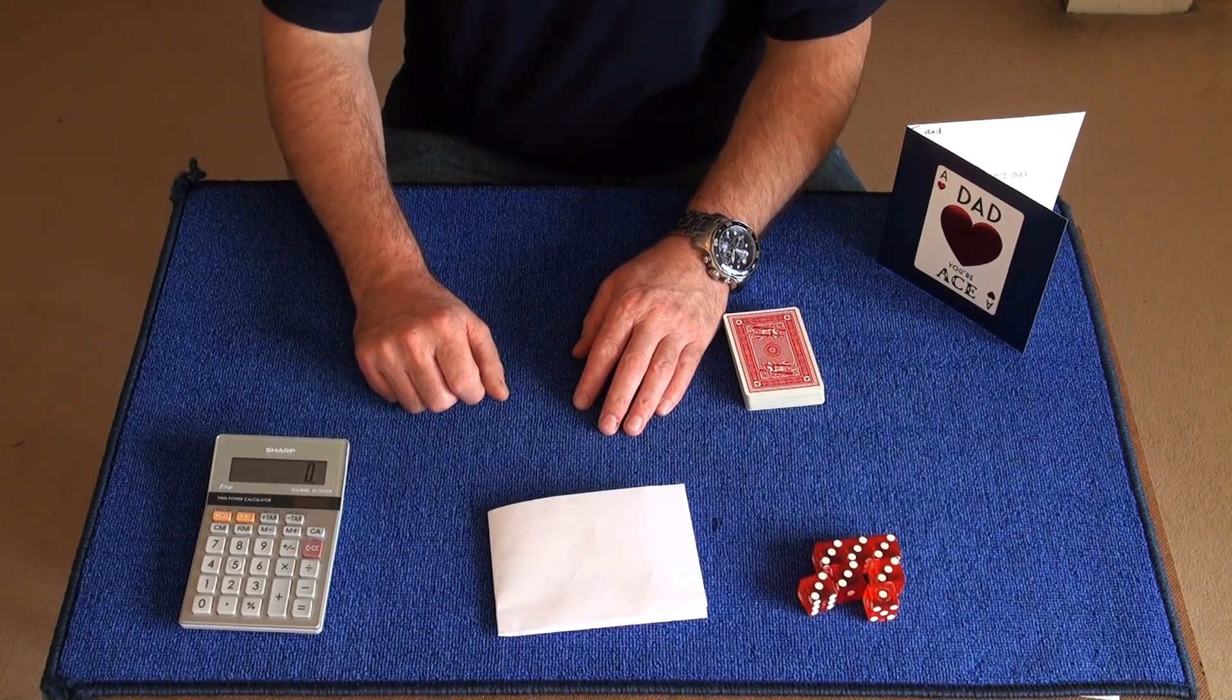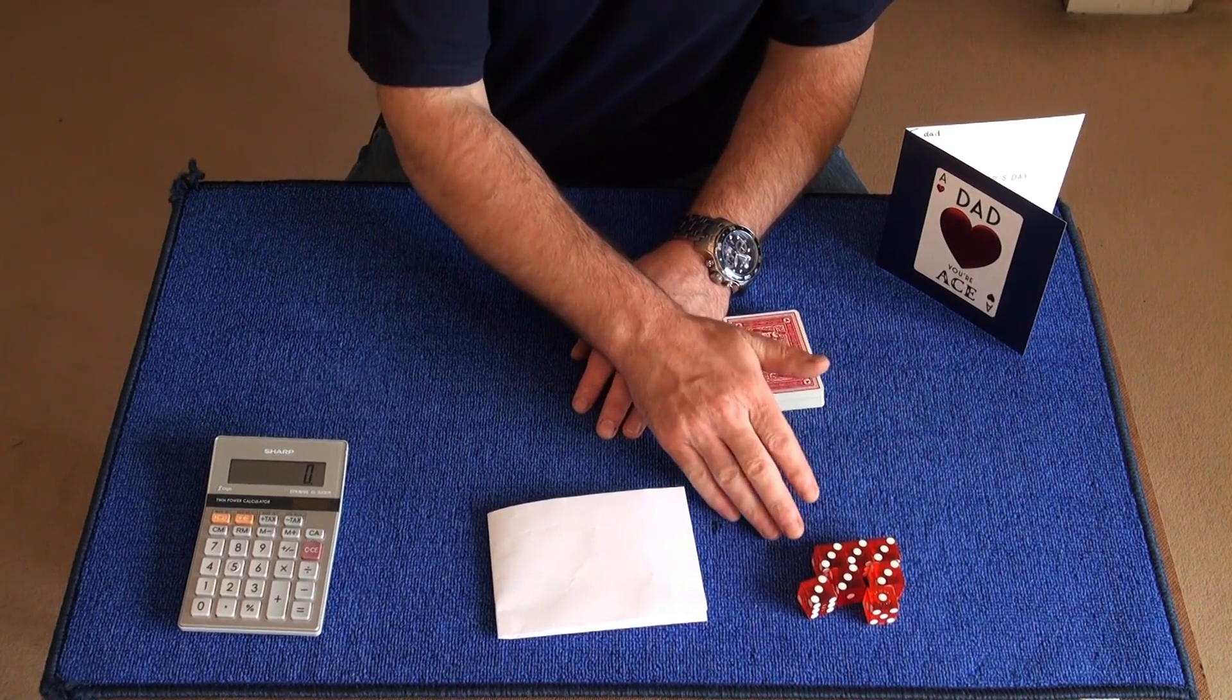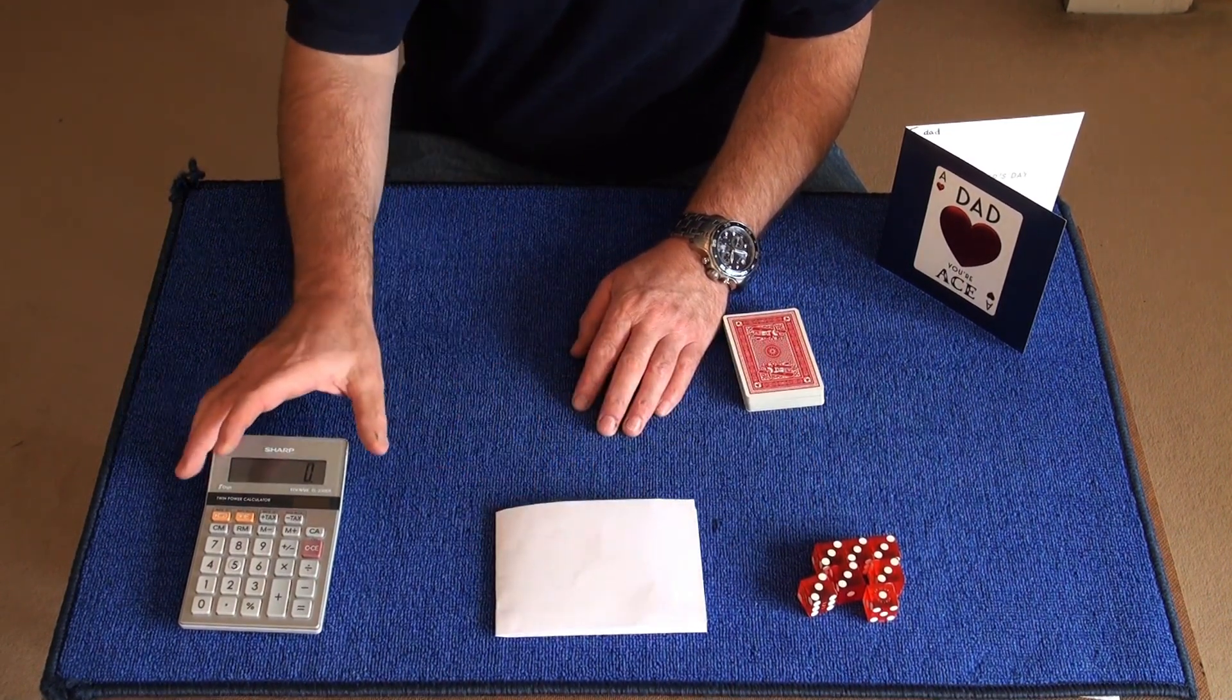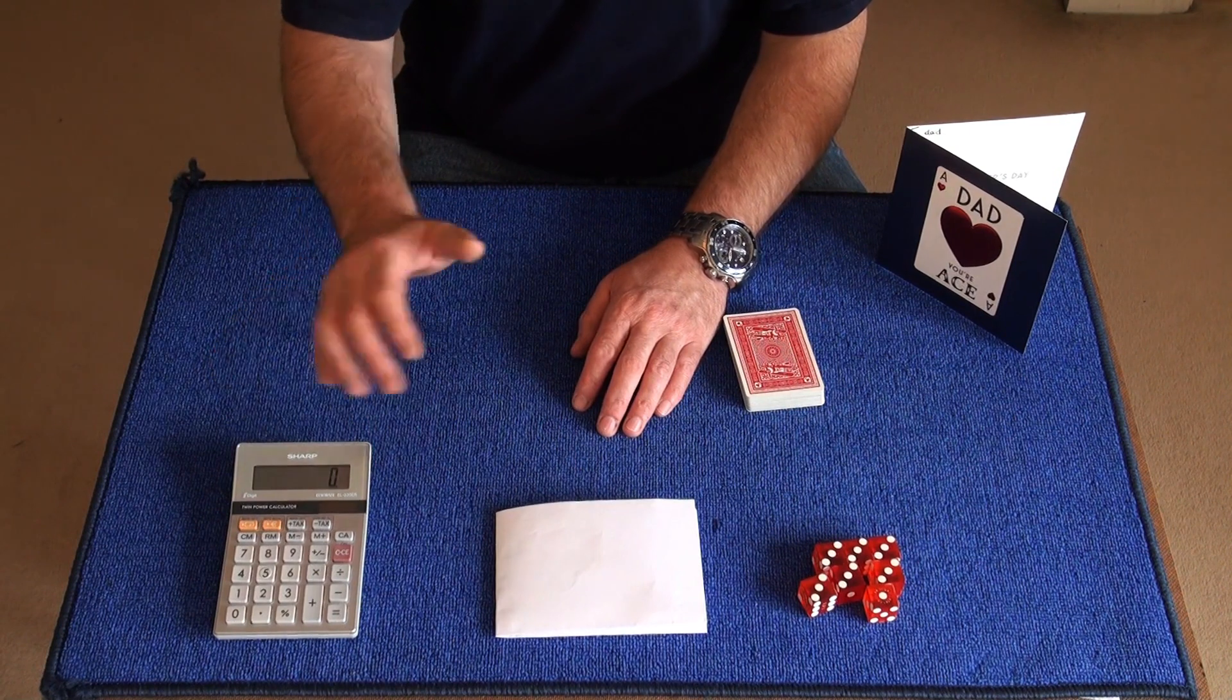Welcome to Lucky Number. For this trick you'll need a deck of cards, seven dice, a list of procedures, a calculator, and obviously a spectator.